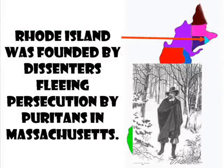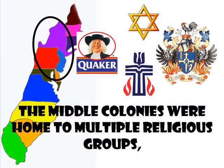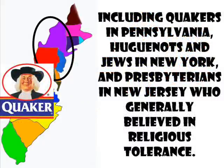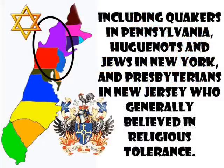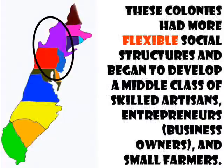Rhode Island was founded by dissenters fleeing persecution by the Puritans in Massachusetts. The middle colonies were home to multiple religious groups, including Quakers in Pennsylvania, Huguenots and Jews in New York, and Presbyterians in New Jersey, who generally believed in religious tolerance. These colonies had more flexible social structures and began to develop a middle class of skilled artisans, entrepreneurs or business owners, and small farmers.